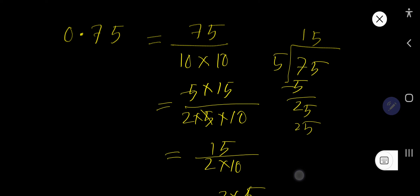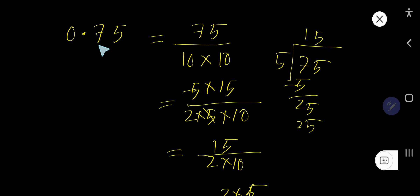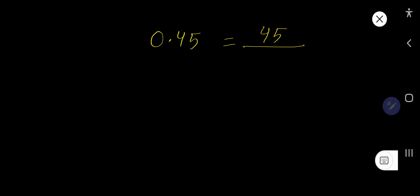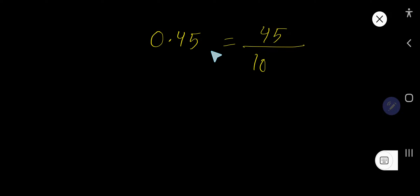Let us take another example: 0.45. First, remove the decimal point and write the number you are getting — here we get 45. For every digit after the decimal point we need to consider 10: 10 for 4 and 10 for 5, and we have to multiply them.